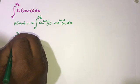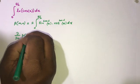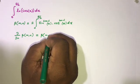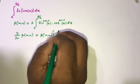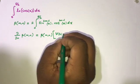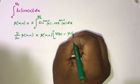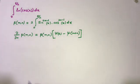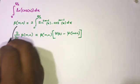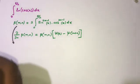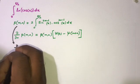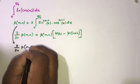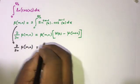Also we know the derivative of the beta function. We can write the derivative of β(m, n) with respect to n is equal to β(m, n) times digamma of n minus digamma of m plus n.